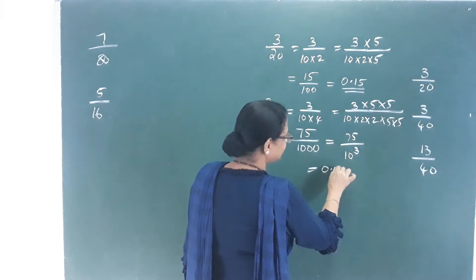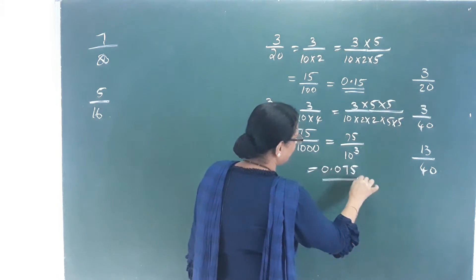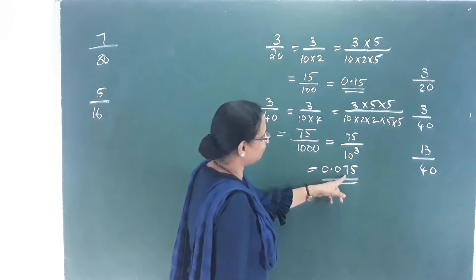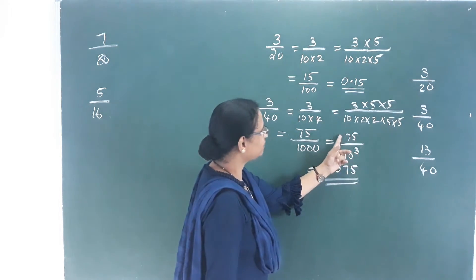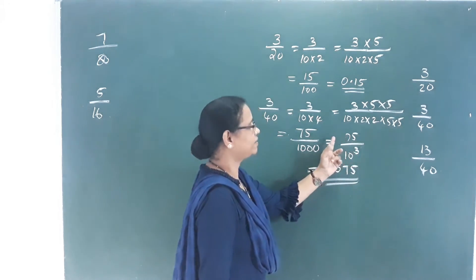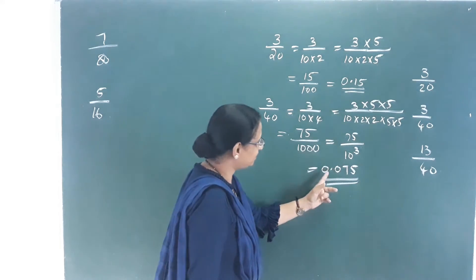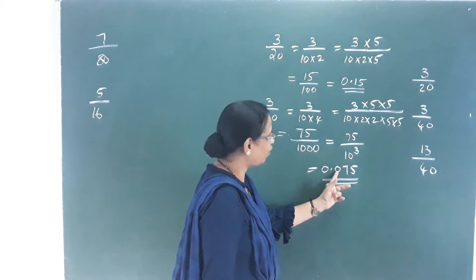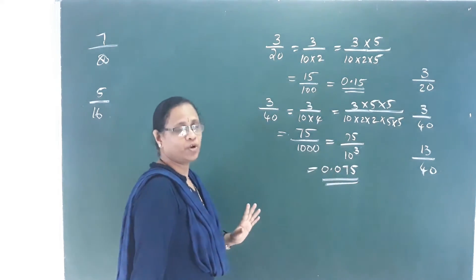So the answer is 0 point 0, 7, 5 — that is 0.075. This is decimal, with 3 decimal places giving 0.075.